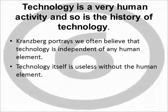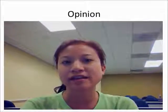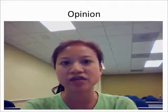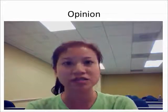Kranzberg is trying to make a point that we often believe technology is independent of any human element, but this is far from the truth. Technology is completely dependent on humans because technology is nothing more than a tool to serve our will — it is useless without the human element. Each invention from the previous law exists because of humans. Without their intellect, research, and development, we would not have the tools we have today. Key figures include Alexander Graham Bell, Thomas Edison, and the Wright brothers.